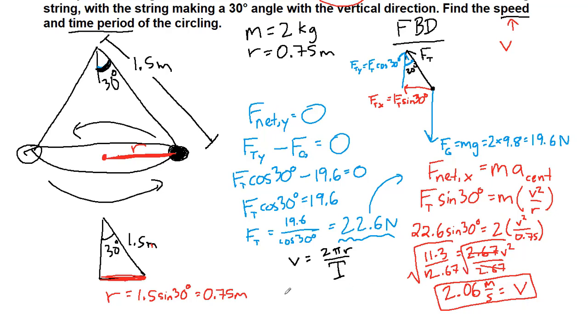So if we multiply both sides by T, we get 2.06 times that time period T just to get it out from the bottom, is equal to 2 times pi times the radius, which is 0.75 in this case. We've already been using that; it's over here. And then we can divide both sides by 2.06.